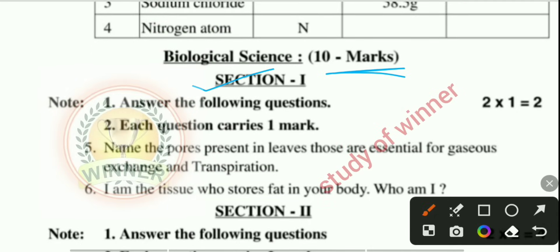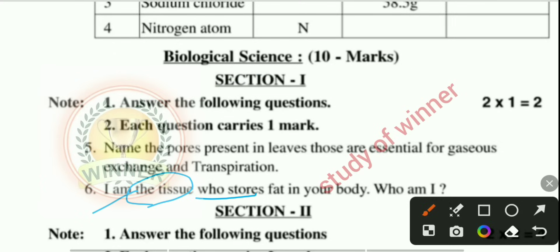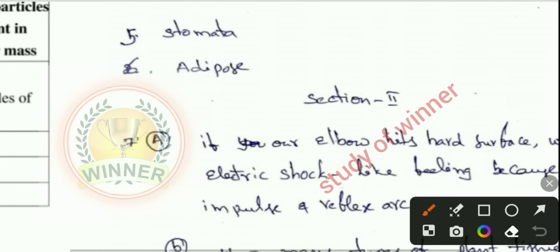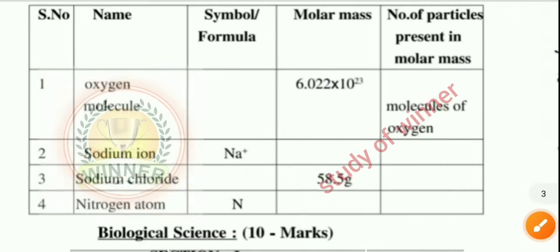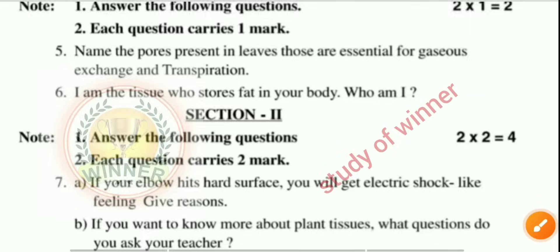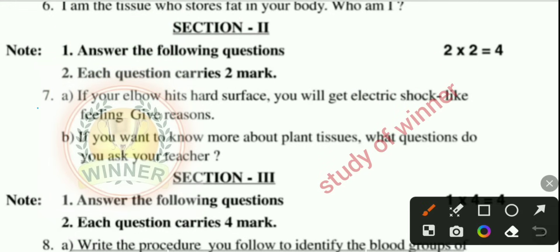Section one of biological science includes question five and question six. The question is: I am the tissue that stores fat in your body. You can see the fifth and sixth answers here.